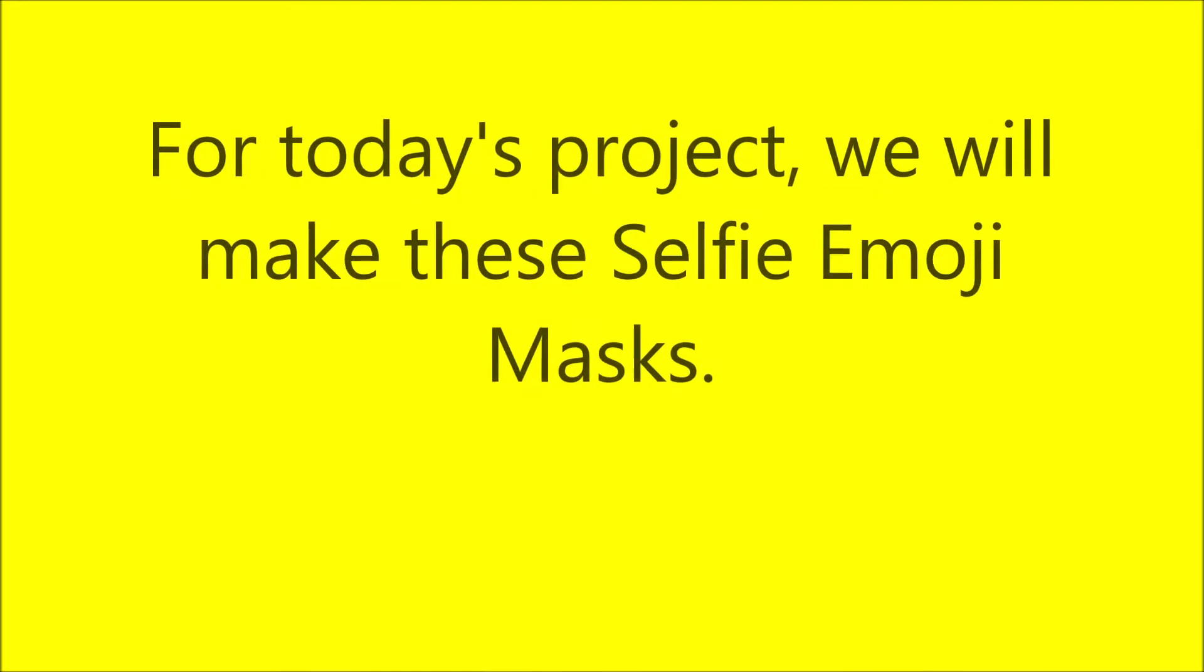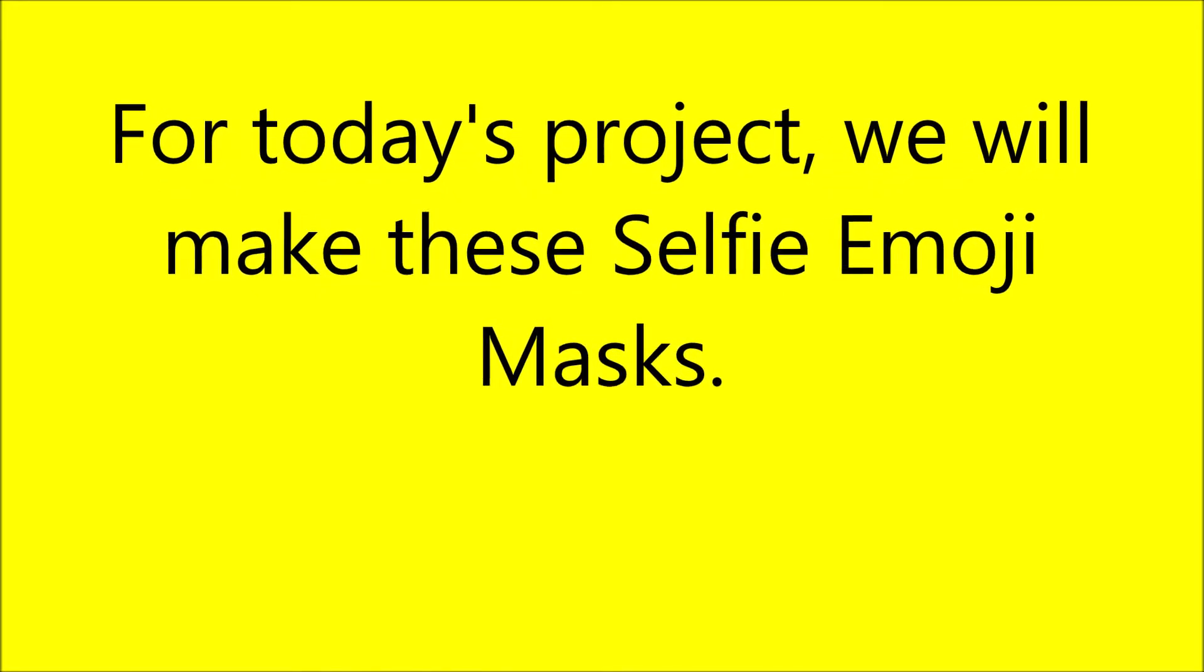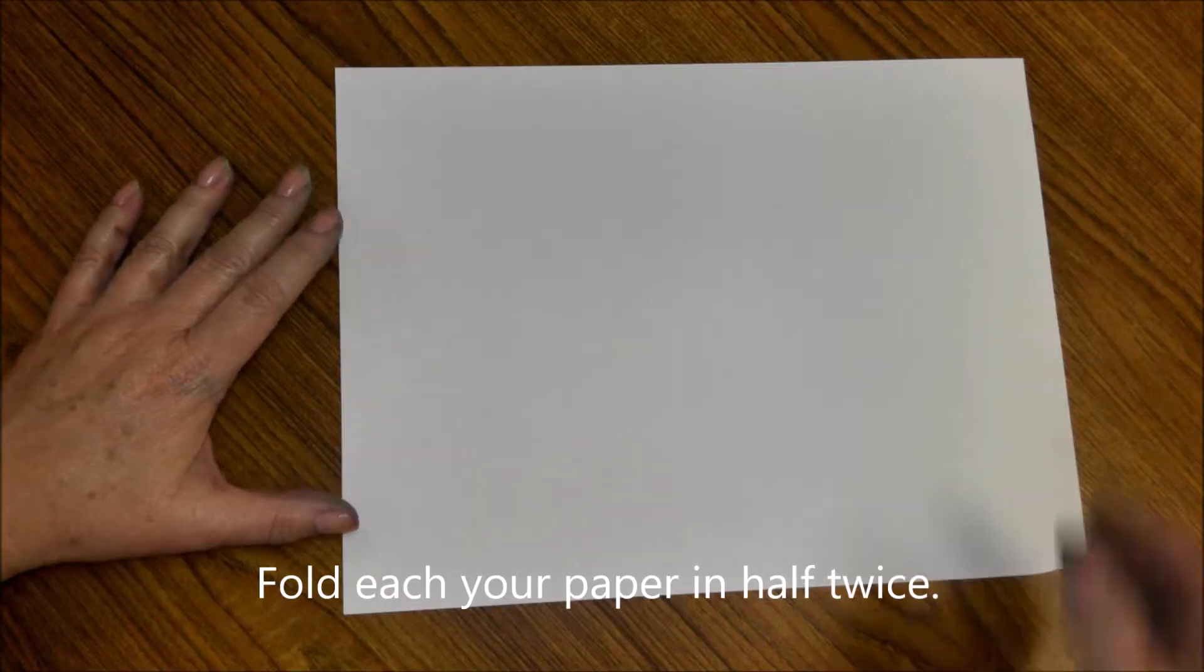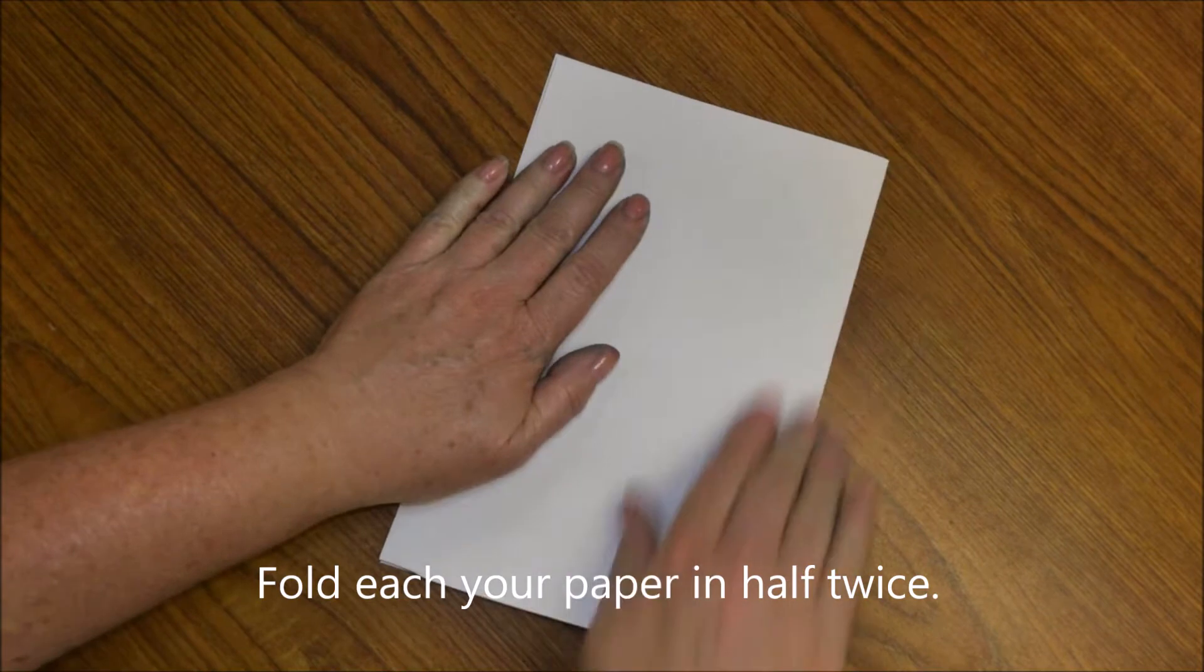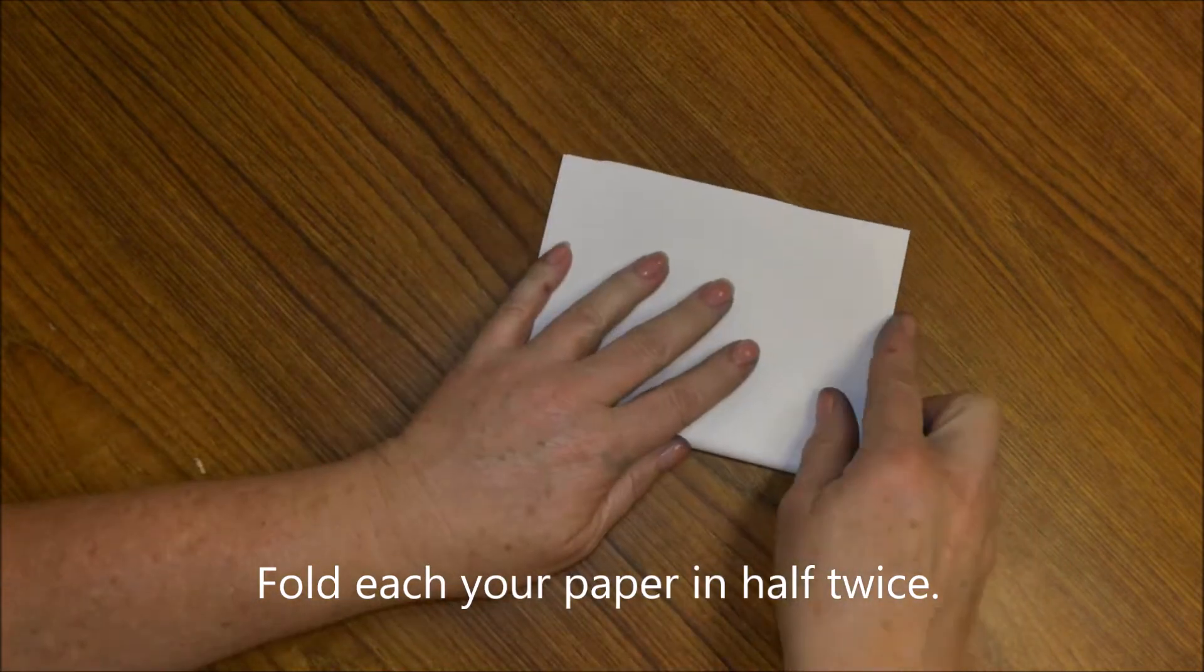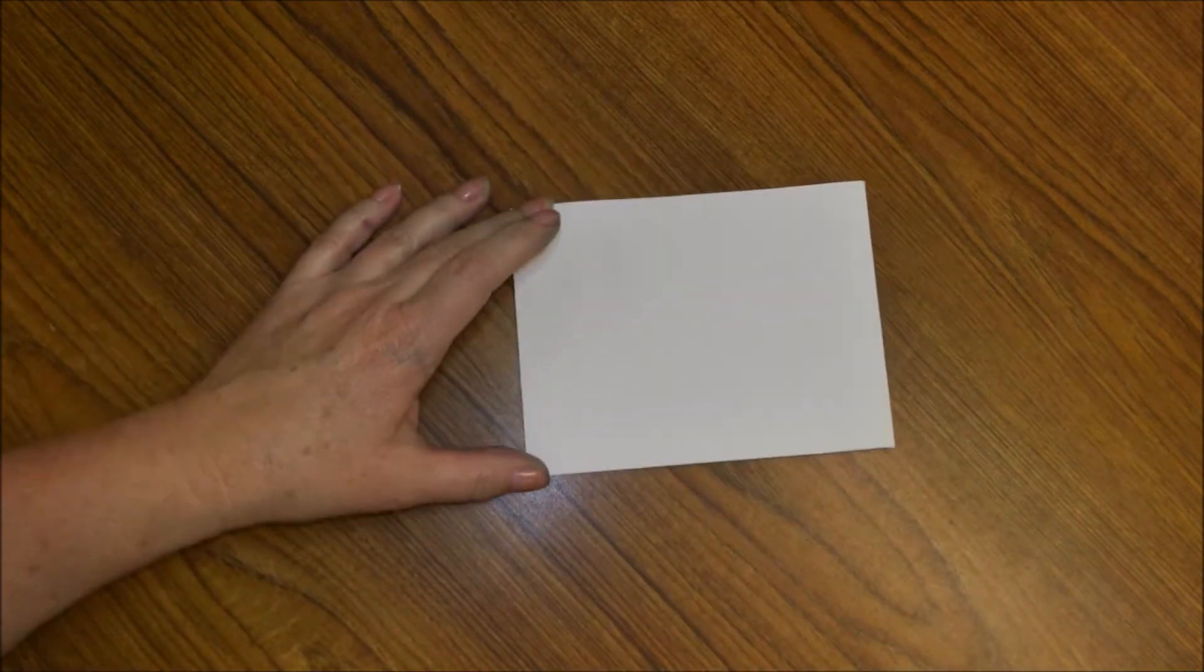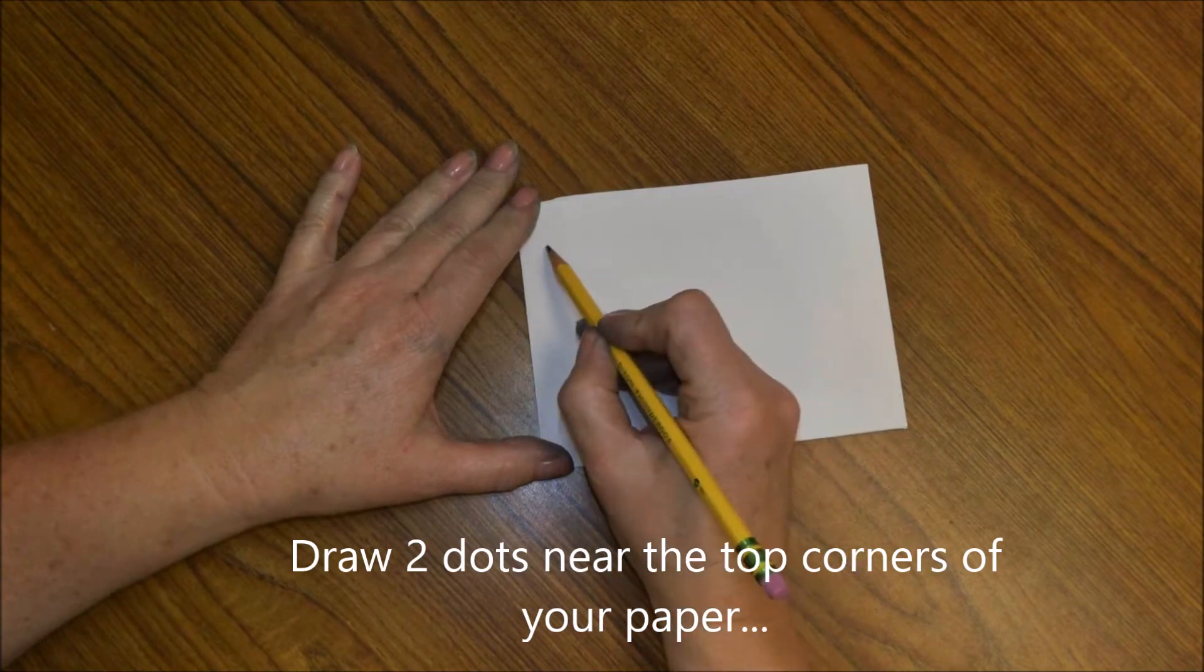For today's project we will make these selfie emoji masks. Start by folding your paper in half twice. This is once, this is twice. Now using your pencil, draw two dots near the top corners of your paper.